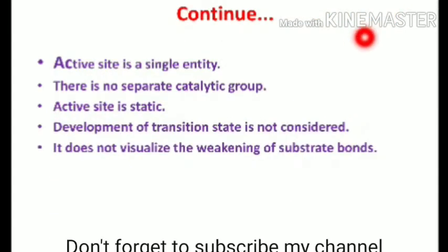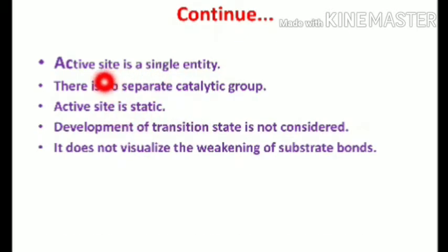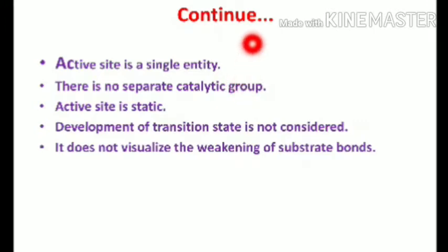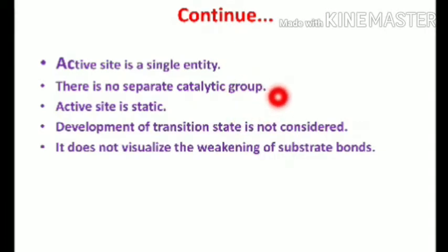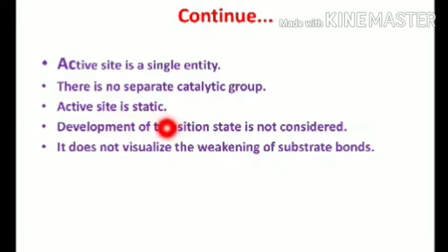The key outcomes of the Lock and Key theory are: it states that the active site is a single entity with no separate catalytic group. The enzyme binds with the substrate only through its active site groups — there is no other group involved in catalysis.